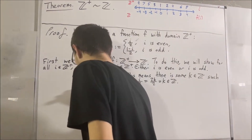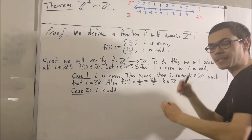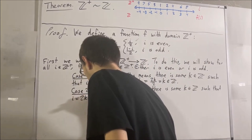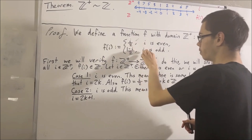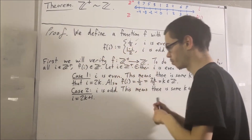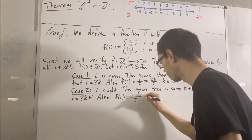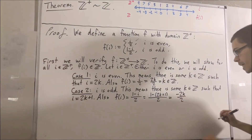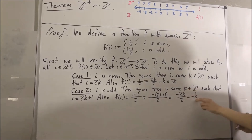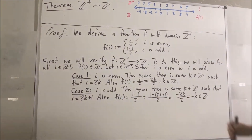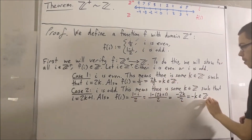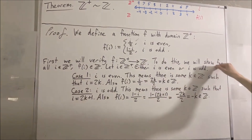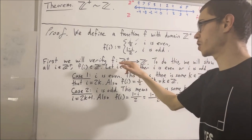Now let's move on to the case where i is odd. Since i is odd, there is some integer k such that i is equal to 2k plus 1. Since i is odd, when we send i into the function f, f of i is assigned to 1 minus i over 2. We substitute i with 2k plus 1, and when we distribute the minus sign, this simplifies to negative 2k over 2, which is negative k. Since k is an integer, negative k is an integer. So f of i is an integer. In either case, f of i is an integer. We gave ourselves an arbitrary positive integer i and deduced that f of i must be an integer, so we have proven that f is a function from the positive integers to the integers.